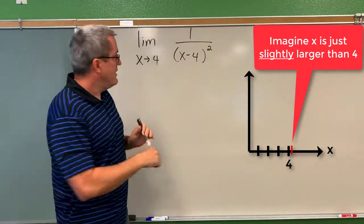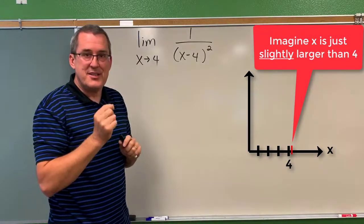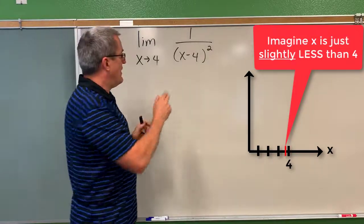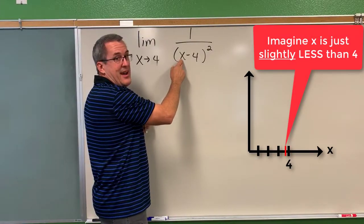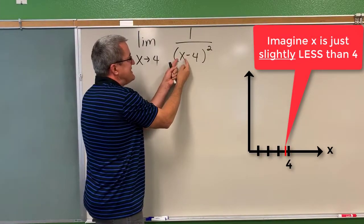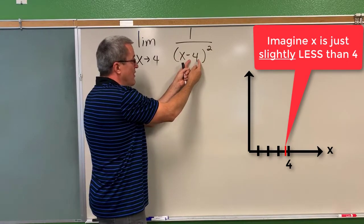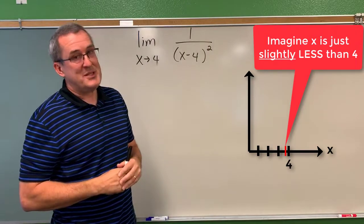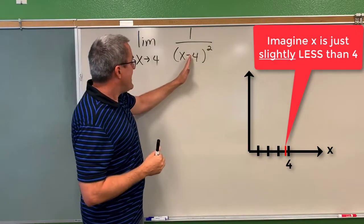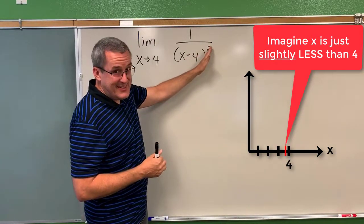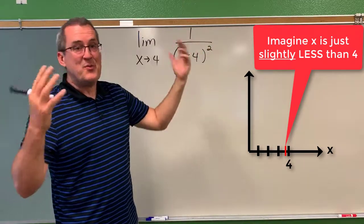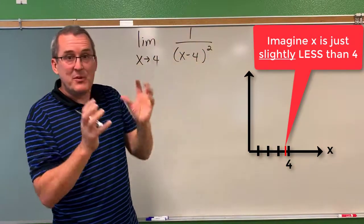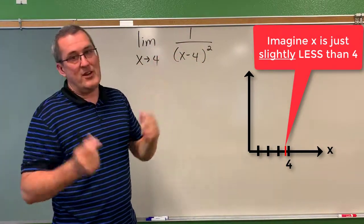Likewise, we can think about input values for x nearby to 4, but instead of slightly larger, slightly less than 4, like 3.9999999. If this value is slightly less than 4, when we subtract 4, it'll produce a negative quantity that's really, really small. Now a negative quantity squared will produce a positive really, really small quantity once again. And 1 divided by that really small quantity will again be a very large quantity.